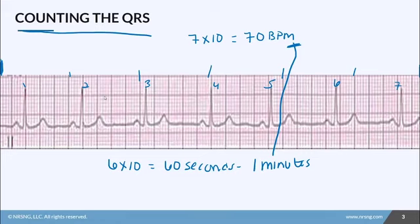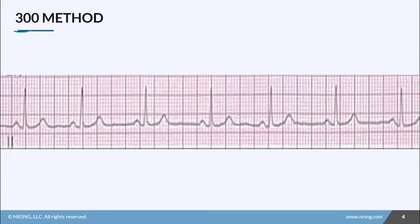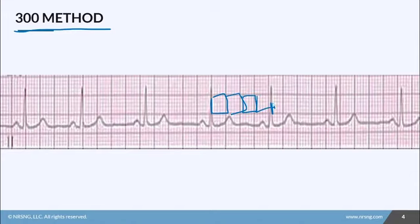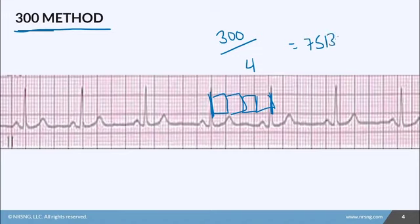The second method is called the 300 method, also known as the rule of 300. First, you pick two QRS complexes. Then you count the number of large boxes in between the two QRS complexes you've chosen — in this case, one, two, three, four — so we have four large boxes. Now divide 300 by four and you get 75 beats per minute.